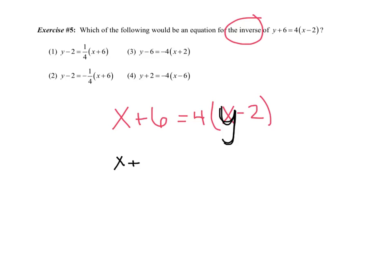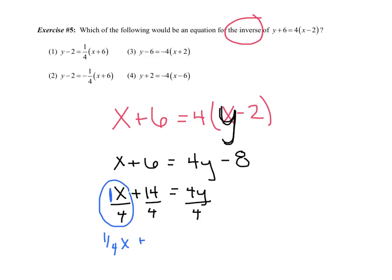I'm going to get x plus 6 equals 4y minus 8. I'm going to add that 8 over, so I get x plus 14 equals 4y. Then I divide both sides by 4. Every term gets divided by 4. Watch this term carefully. In front of that x, there is a 1. So this is actually 1 fourth x plus 14 fourths, which I'm going to divide by 2 and get 17 halves equals y.